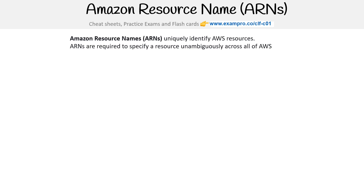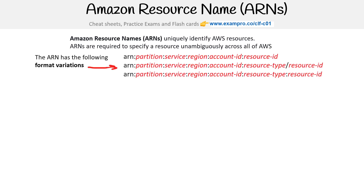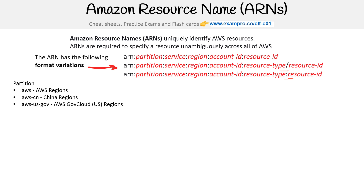Amazon Resource Names uniquely identify AWS resources. ARNs are required to specify a resource unambiguously across all of AWS. The ARN has the following format variations. The partition could either be AWS, China, or GovCloud, because these are AWS portals or URLs that are completely separated from each other, as discussed earlier in the course.